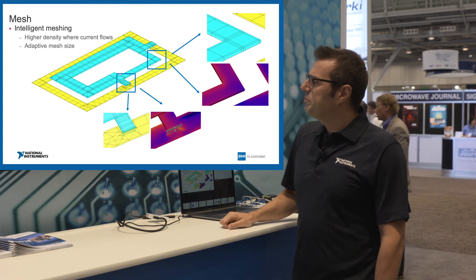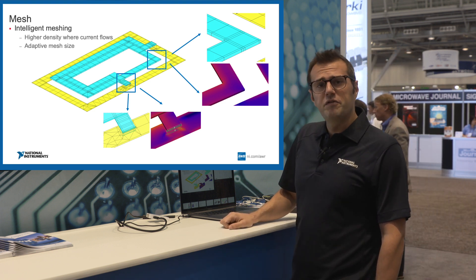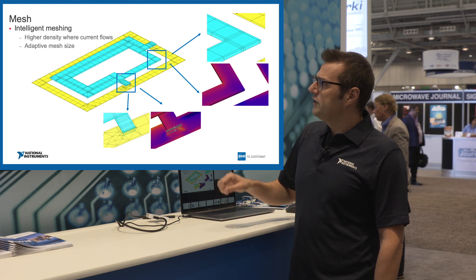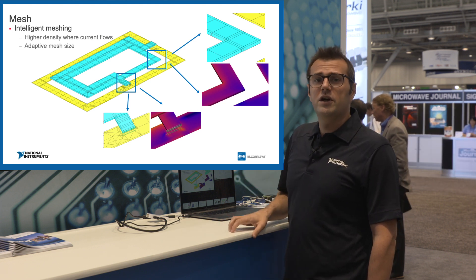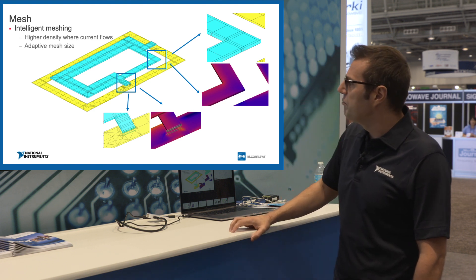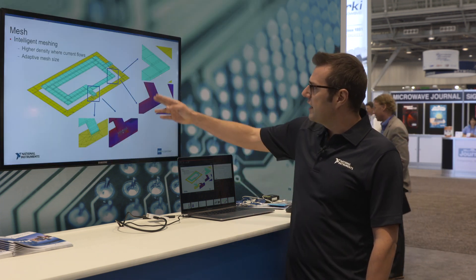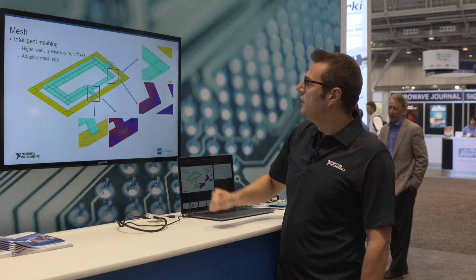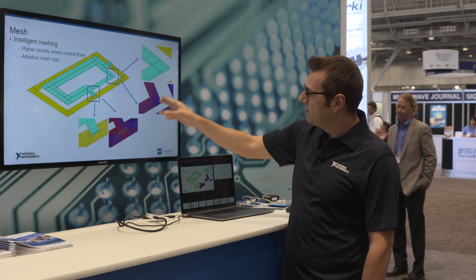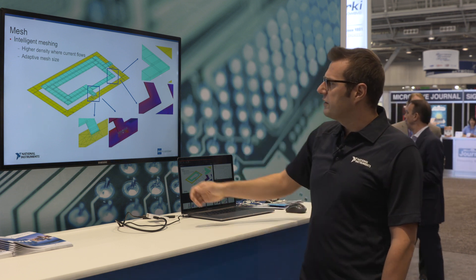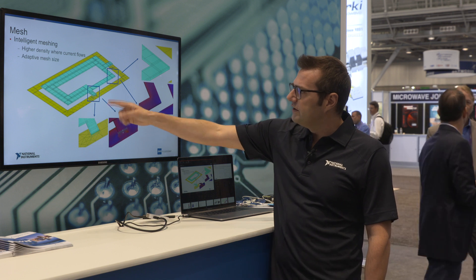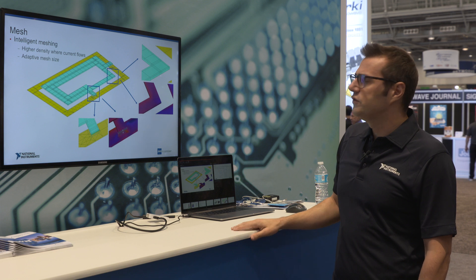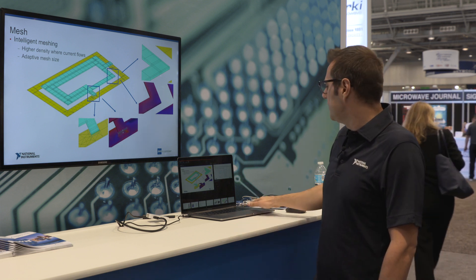Here you can see the meshing on the spiral inductor. As mentioned, Axiom has hybrid meshing and will refine the mesh where current tends to flow. In this example you can see edge meshing applied to the edges of the spiral conductor, where the current is flowing. Also, next to the port, there is finer meshing to account for the higher current concentration in that region.